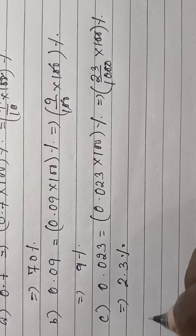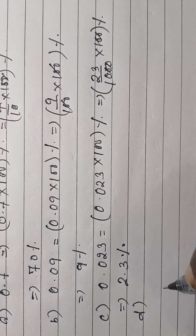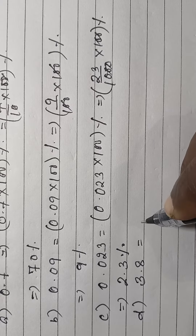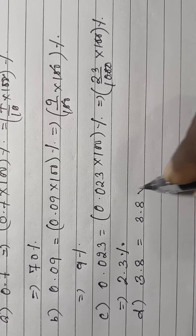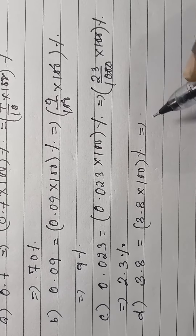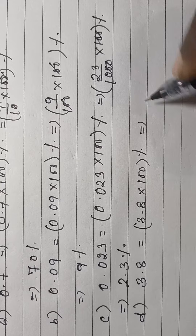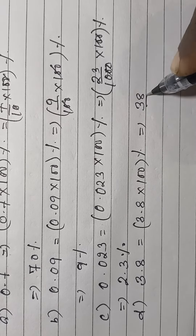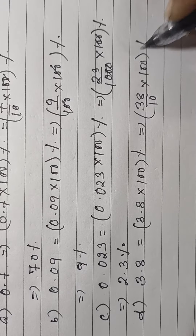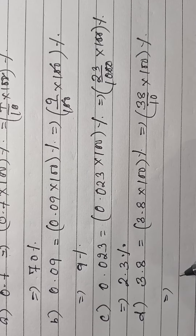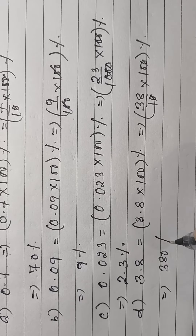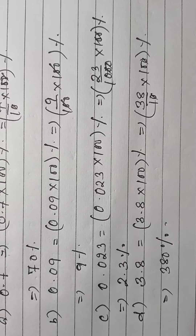D: 3.8 — so 3.8 into 100 percent. This is 38 by 10 into 100 percent, giving 380%.